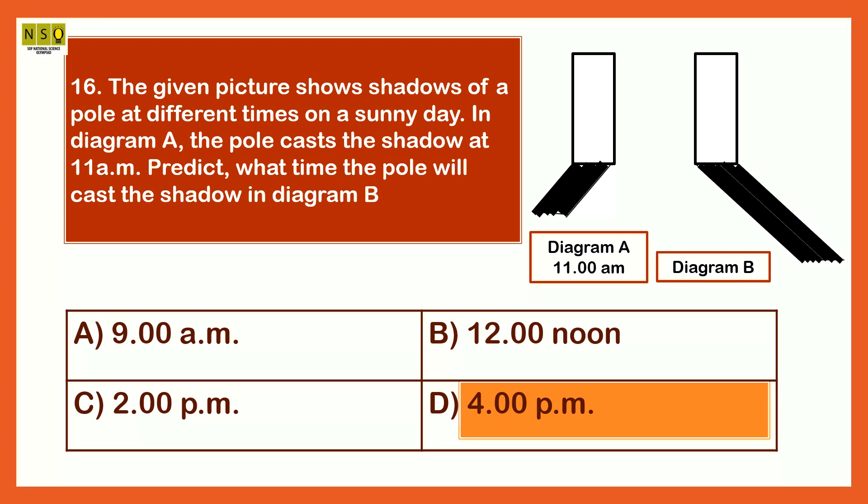As the sun rises in the sky from morning till noon, the shadow will decrease in size and will be minimum at noon. Similarly, from noon to evening as sun approaches to set, the shadow will again increase in size. Therefore, the longest shadow would be at 4 p.m.